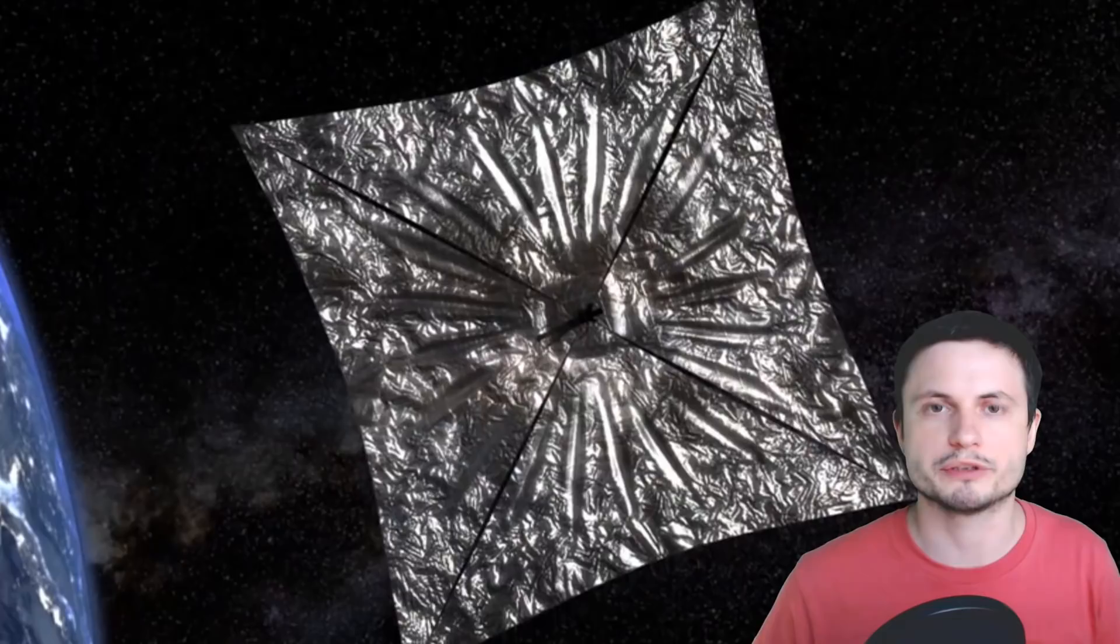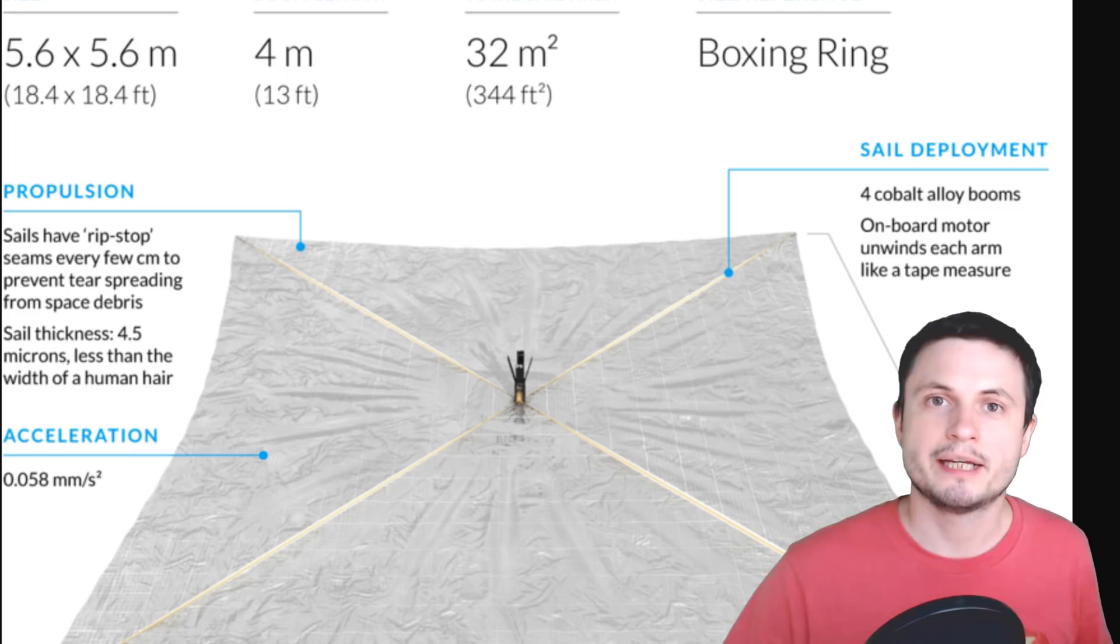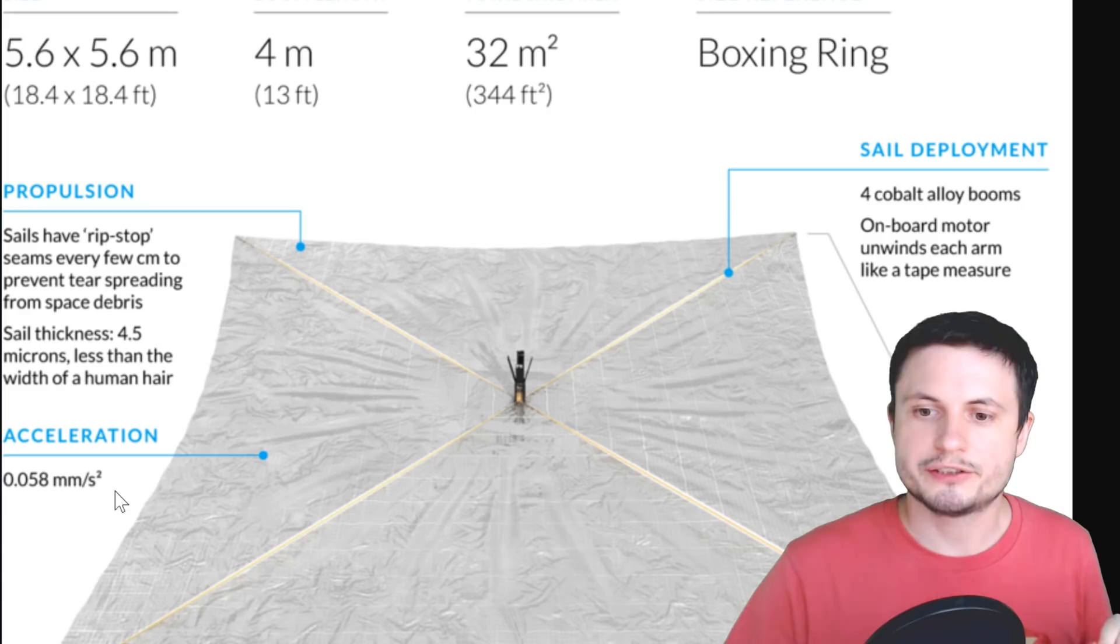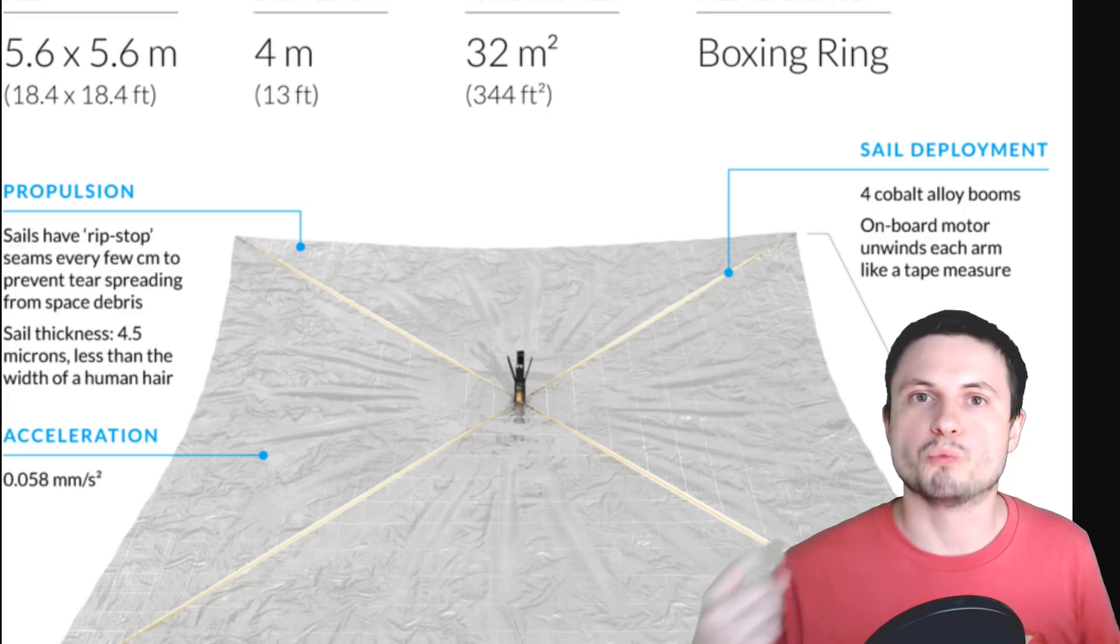But anyway, so can we actually use this to travel the solar system? Well, let's start with a simple calculation. Let's start with the idea of the optimal acceleration, the maximum acceleration the sail can create if we were to position it perfectly against the sun. In this case, as you can see right here, the acceleration would be roughly around 0.058 millimeters per second squared. Okay, that is really low.